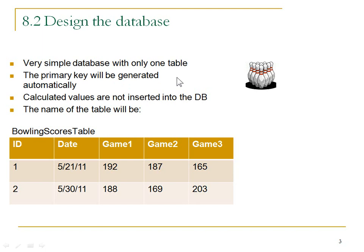There are two classes we'll use to interact with the database. One is called SQLiteDatabase — that's the actual database object we're aiming at — but we'll use the SQLiteOpenHelper class to get started. It helps us get a database onto the device. We're going to make a very simple database with one table. Each record must have a primary key so we can identify it as unique, and we'll ask the database to generate those for us automatically as we add records.